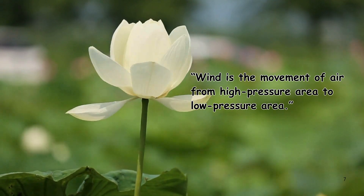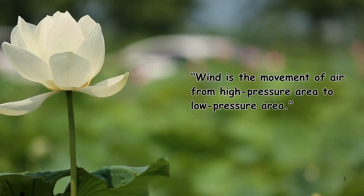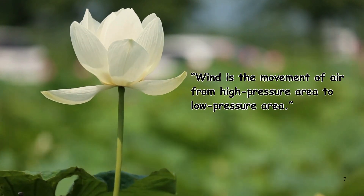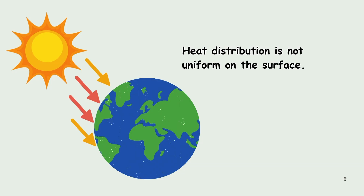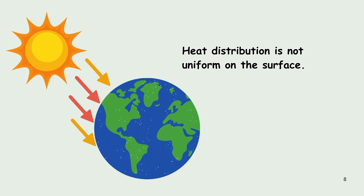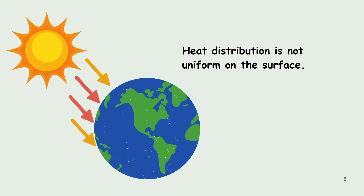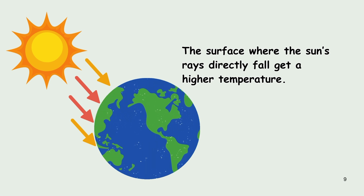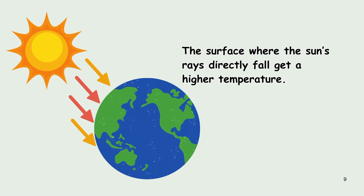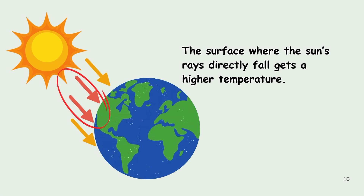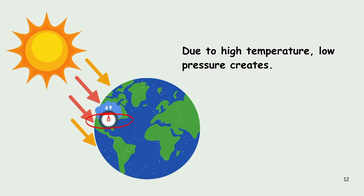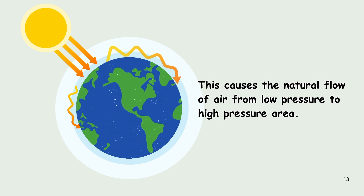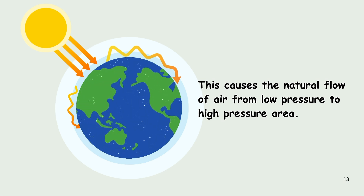Let us first see the definition of wind. Wind is the movement of air from a higher pressure area to a lower pressure area. Heat distribution is not uniform on the surface of the earth. The surface where the sun's rays fall directly gets a higher temperature. Due to high temperature, low pressure creates, and this causes the natural flow of air from the low pressure area to the high pressure area.